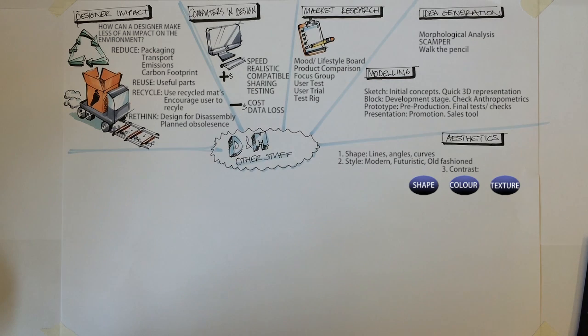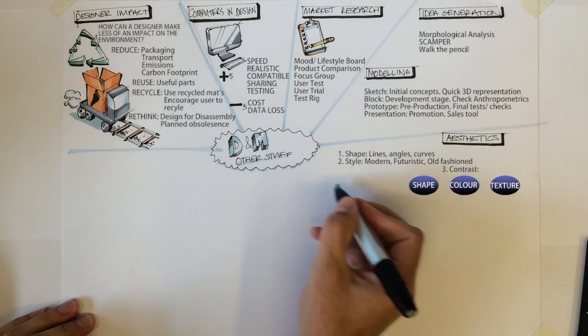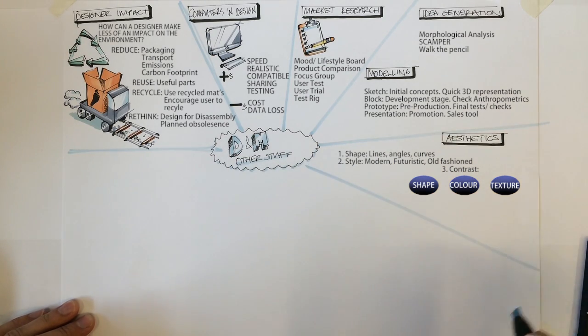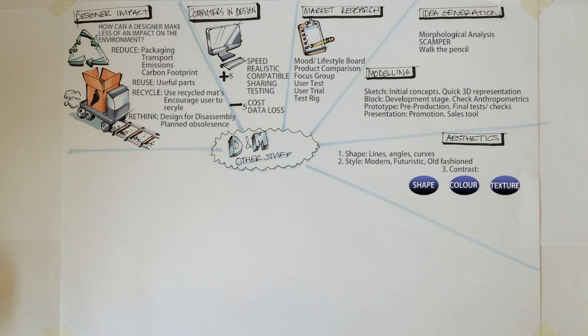Contrast. Contrast is all to do with opposites and how this impacts on the design or informs the consumer how to use it. It comes in three forms: contrasting shape, colour and texture. Contrast is usually used to inform the user of how to use the product. Think Bop It. The different colours and shapes tell you that each button performs a different function.